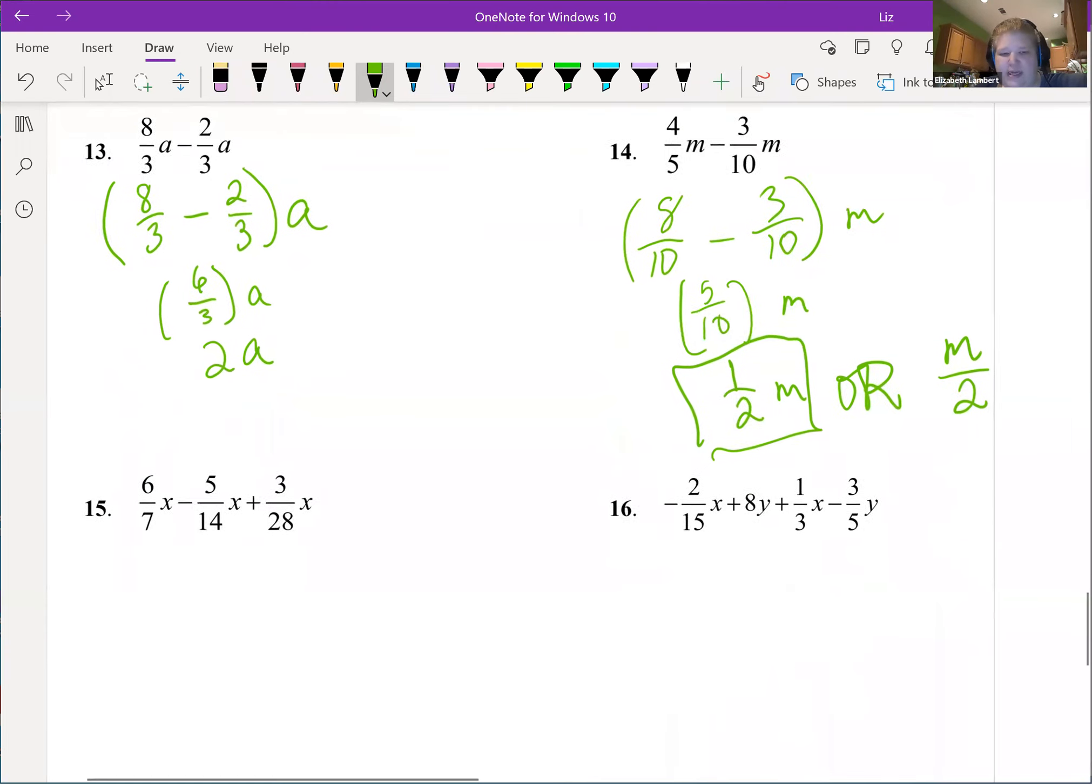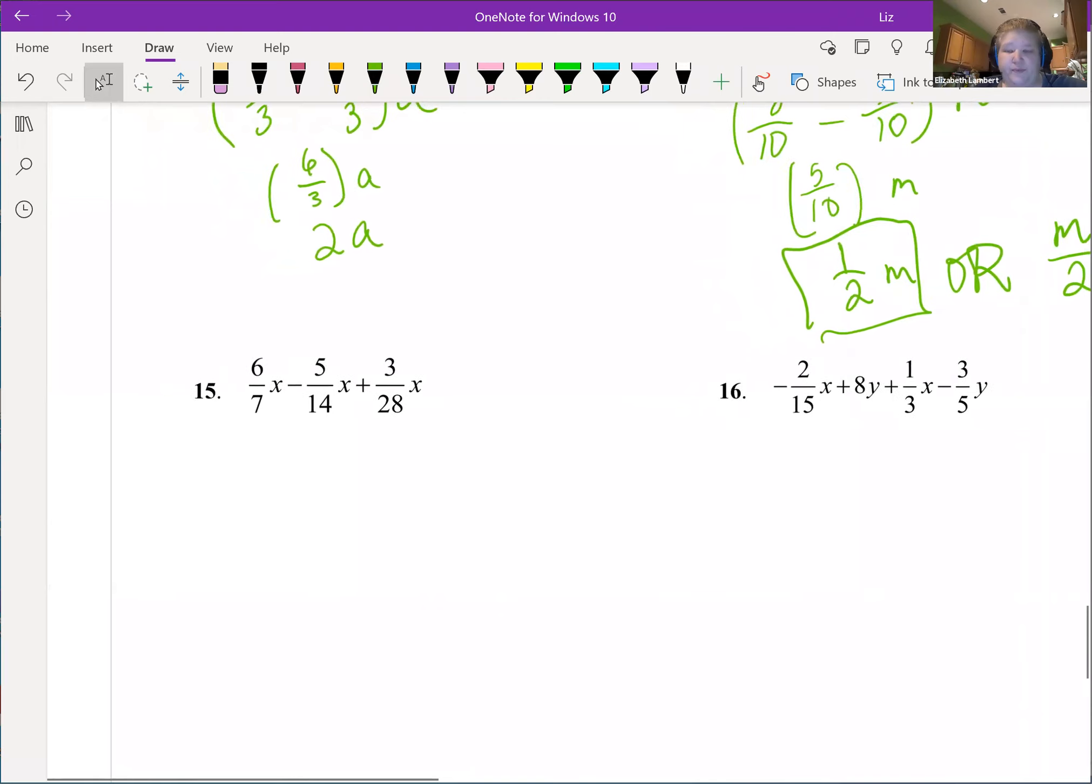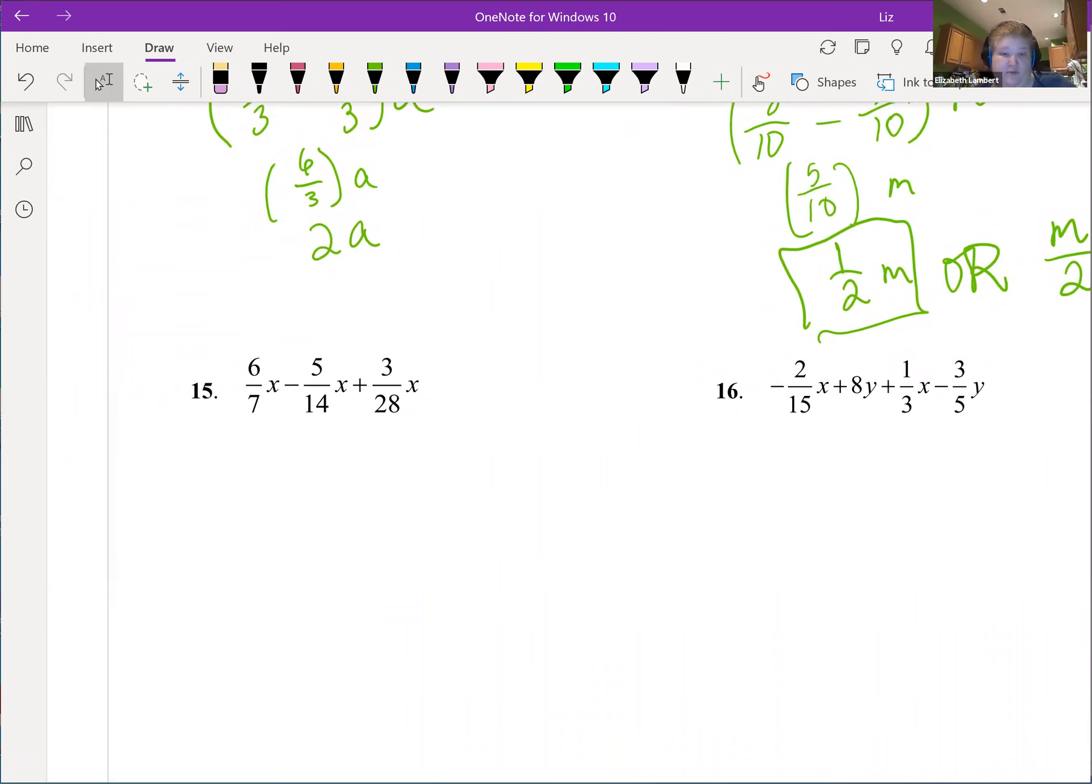Then we have this, well they're all x's at least, so just common denominator which actually happens to be 28. So the first fraction is going to get quadrupled, the middle fraction here is going to get doubled, and the last one will stay the same. I'm going to go ahead and copy down the x.